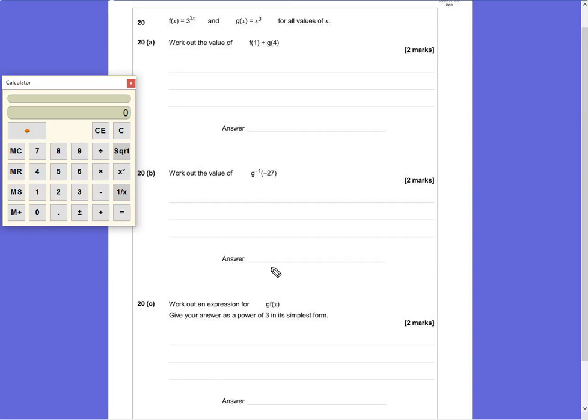Question 20. f(x) = 3^(2x) and g(x) = x³ for all values of x.